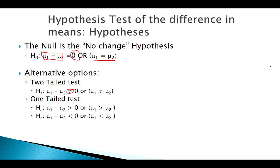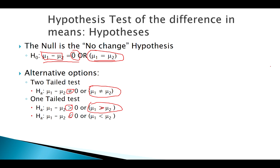We still have all three options: if we're looking for a general difference it's two-tailed; if we think one group is bigger than the other it could be right-tailed or left-tailed. There are two ways to write the hypotheses — either as the parameter of interest equal to a claimed value, or more compactly: that group one and group two are generally different, that group one's mean is bigger than group two's, or that group two's mean is bigger than group one's.